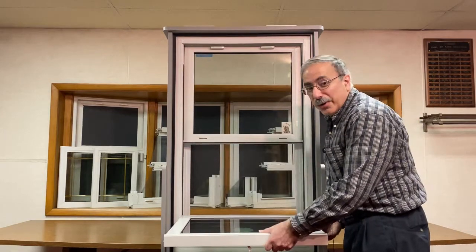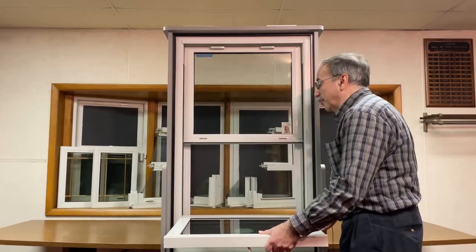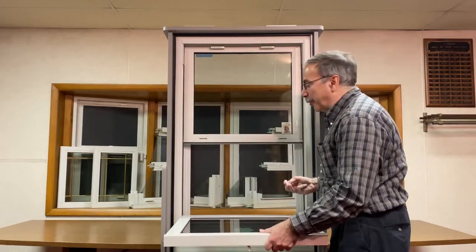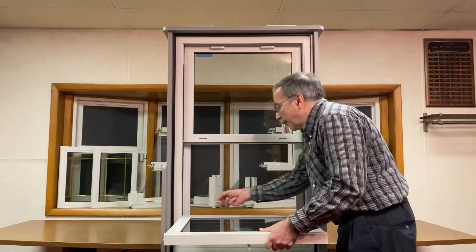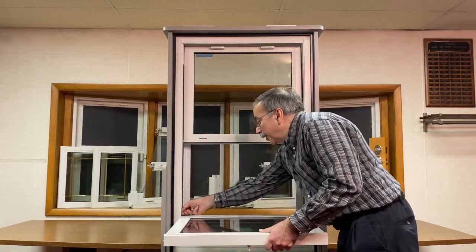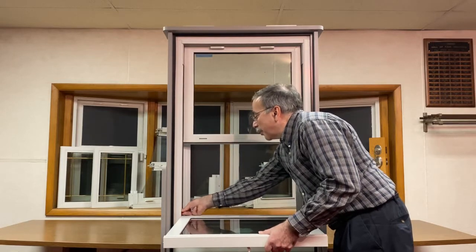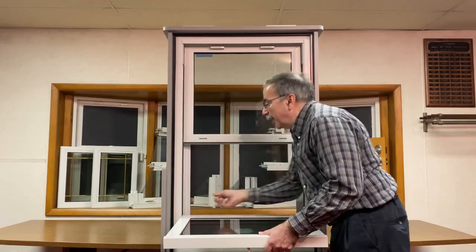Once the pivot bars are secured into the balance shoe, you're going to insert the tamper locks back into the balance shoe by maintaining the perpendicular position of the sash and installing the tamper locks back into place.